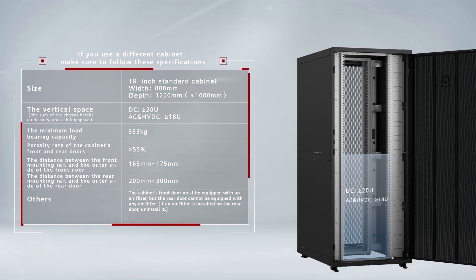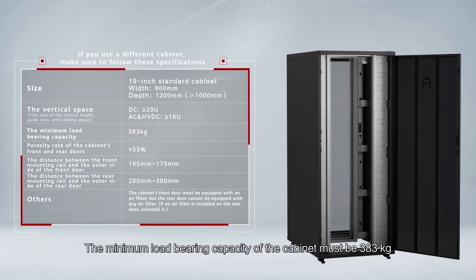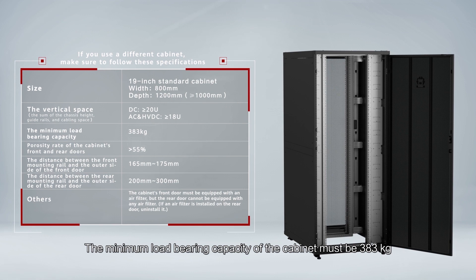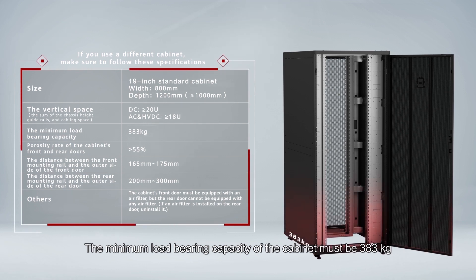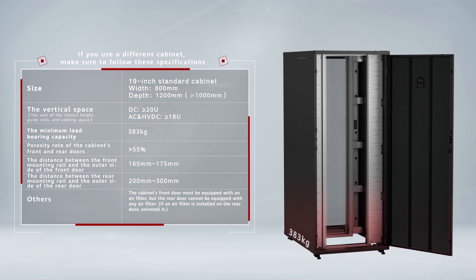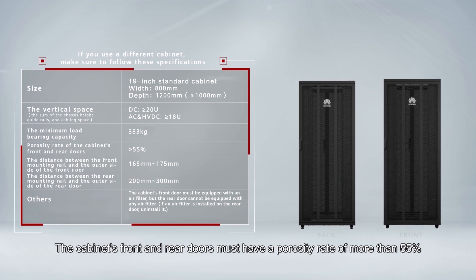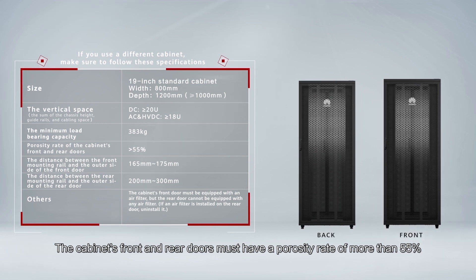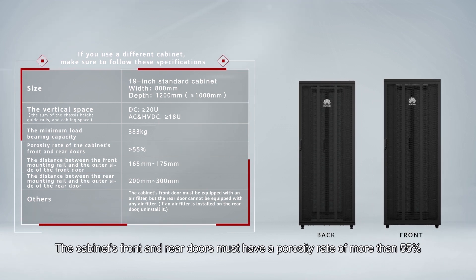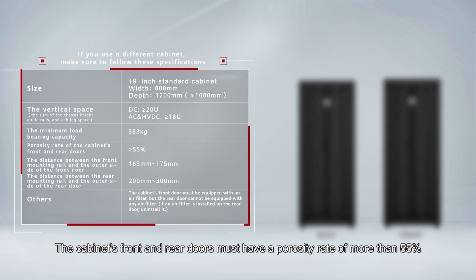The minimum load-bearing capacity is 383 kilograms. The cabinet's front and rear doors must have a porosity rate of more than 55 percent.